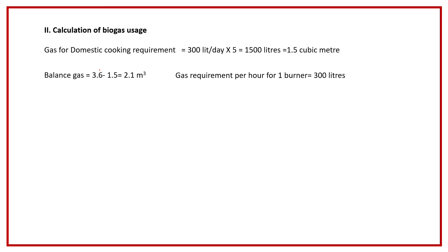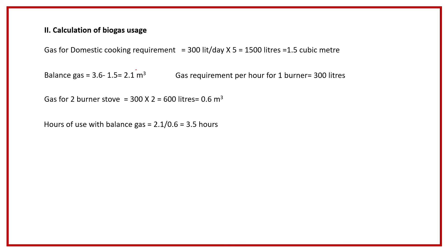The daily gas production is 3.6 cubic meters and the cooking requirement is 1.5 cubic meters, so the balance gas available for the burners is 3.6 minus 1.5, which equals 2.1 cubic meters. For two burners it requires 0.6 cubic meters per hour, so the number of hours is 2.1 divided by 0.6, which equals 3.5 hours. After meeting the five-member family's cooking requirement, the farmer is able to use the two burners for approximately 3.5 hours to boil milk.